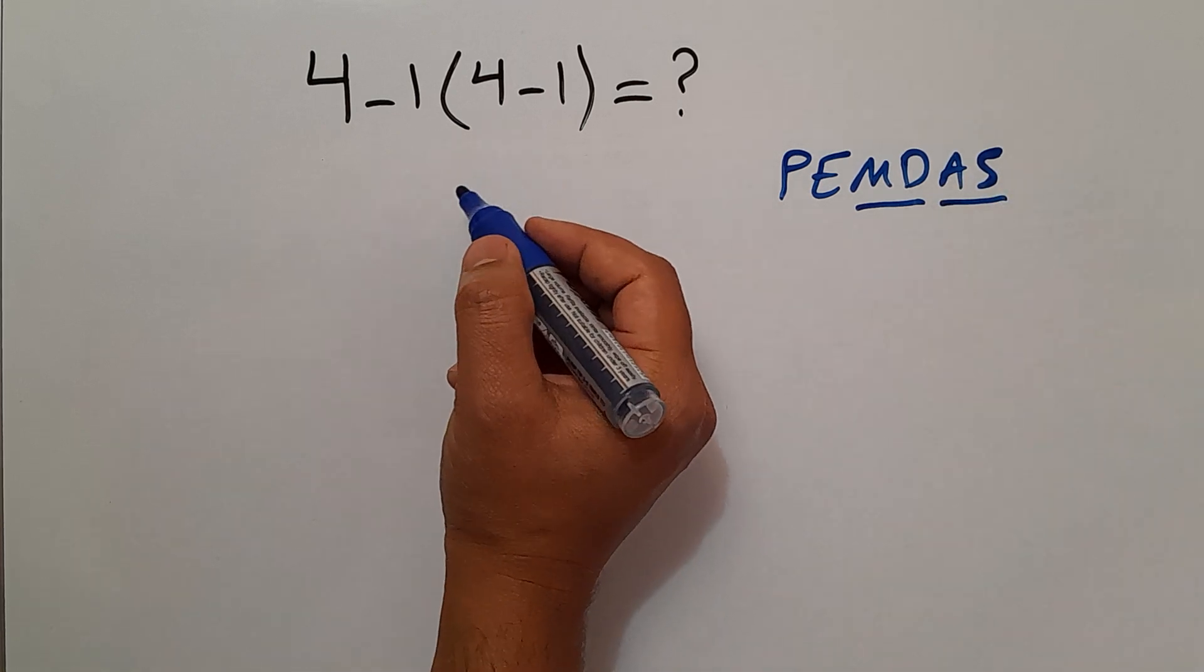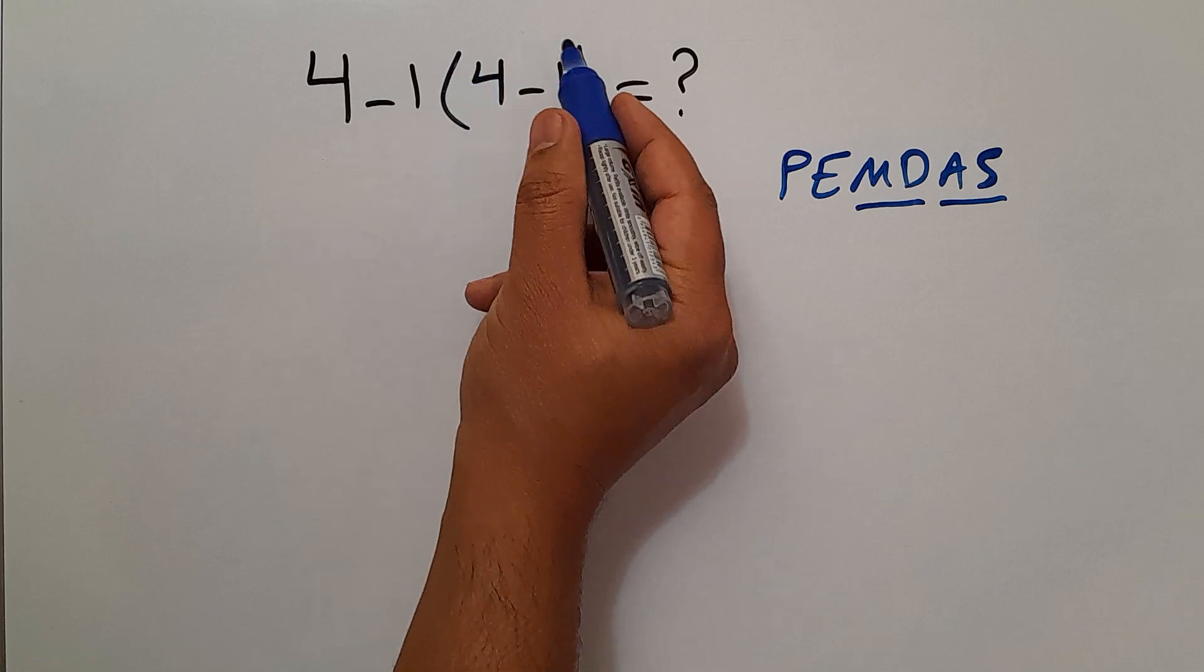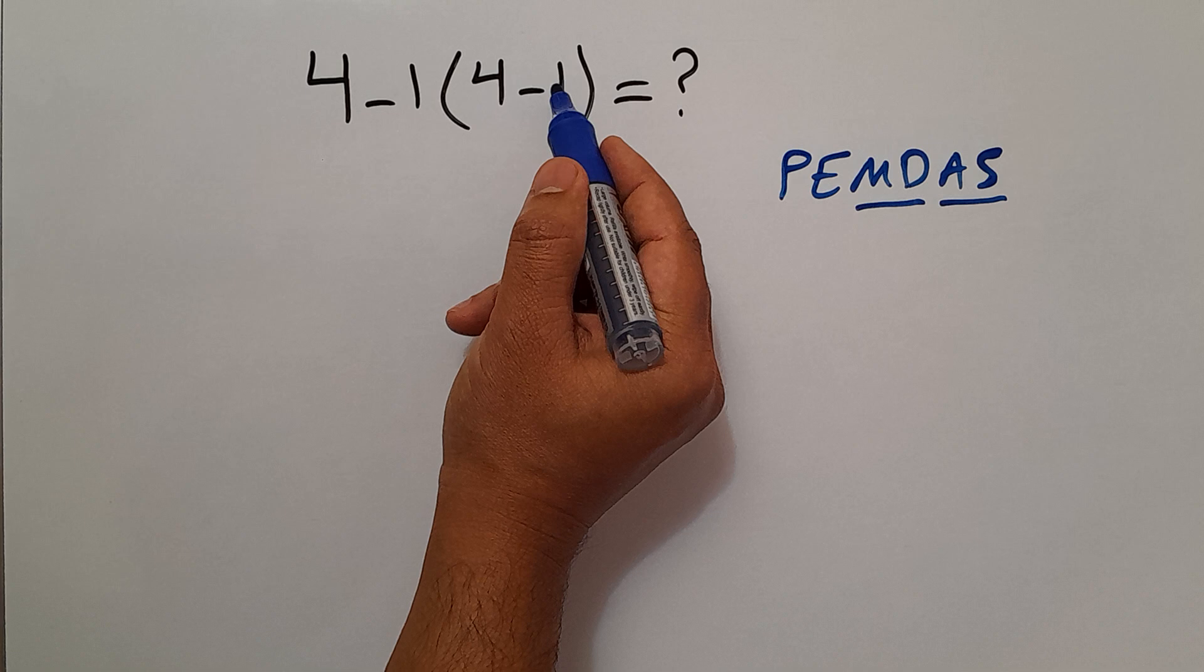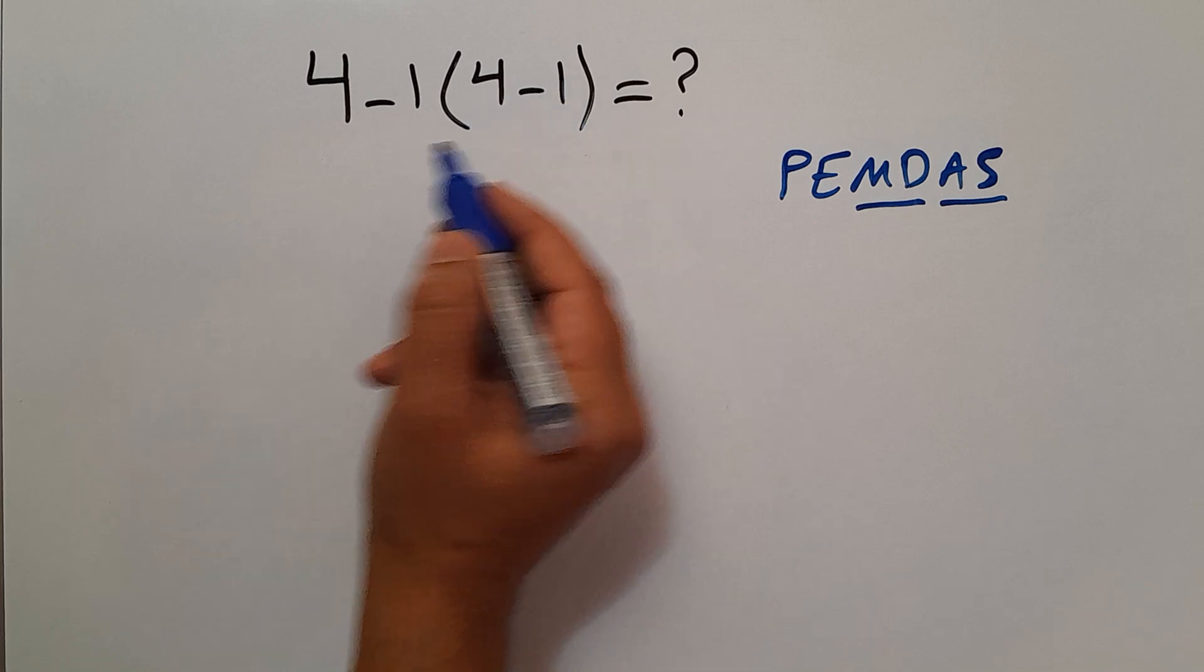So here first we do these parentheses. Inside these parentheses we have 4 minus 1 which equals 3, so 4 minus 1 times 3.